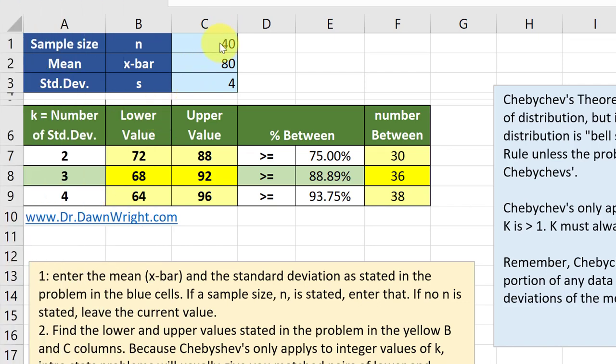We enter the data into the blue cells: n equals 12, mean equals 4, standard deviation equals 1. The calculator updates and we can look for the lower and upper values. They are in the k equals 2 row, and looking across we find that at least 75 percent of the households will be in that range, and that is nine households.